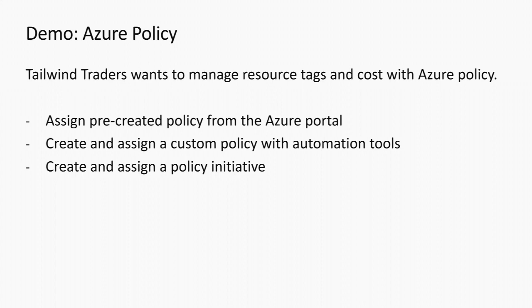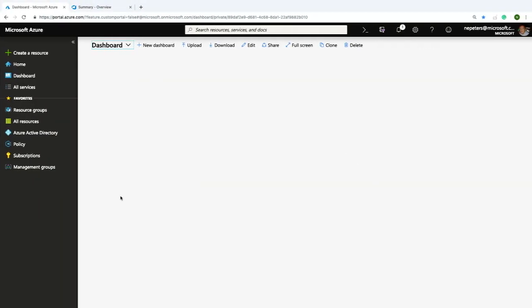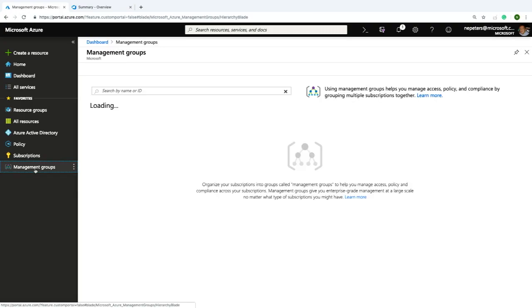The scenario for the policy demo is that Tailwind Traders wants to manage resource tags and cost with Azure Policy. We're going to use the portal to assign a pre-created policy, use PowerShell to create a custom policy, and create a policy initiative. I also wanted to quickly show management groups — if I click on management groups, a management group is just a collection of subscriptions. I've got a management group called 'Any Peters Internal' with two subscriptions inside it.